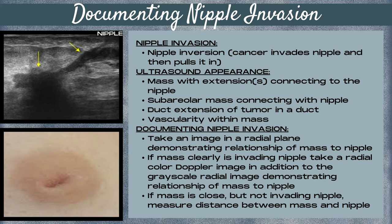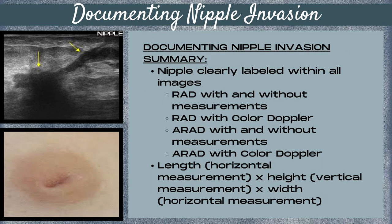After you've taken all your radial images, then move on to the anti-radial plane to finish up your documentation. To summarize how to document nipple invasion: first, ensure that the word 'nipple' is clearly labeled within all of your images. You also want to take radial images with and without measurements, a radial image with color Doppler, and anti-radial images with color Doppler.